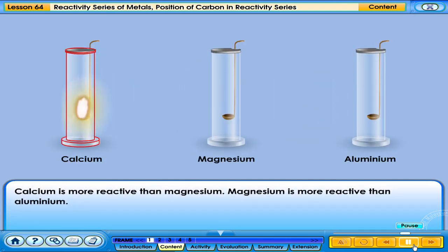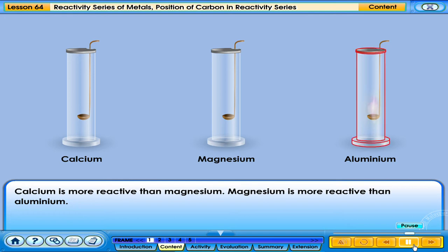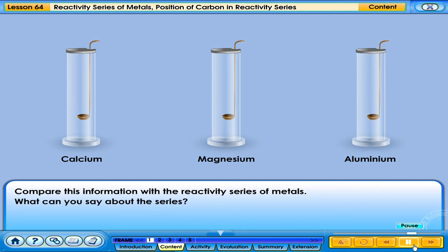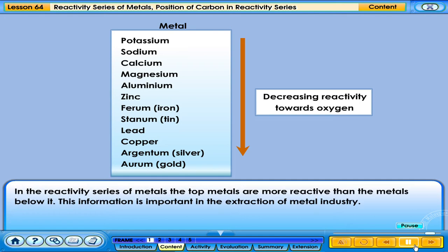Calcium is more reactive than magnesium. Magnesium is more reactive than aluminum. In the reactivity series of metals, the metals are arranged with decreasing reactivity towards oxygen. The top metals are more reactive than the metals below them.